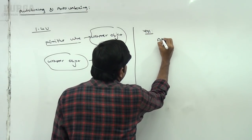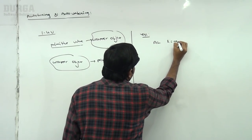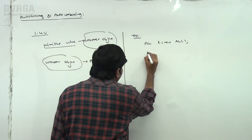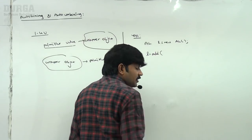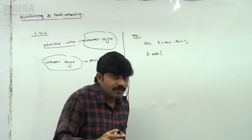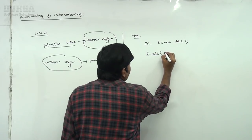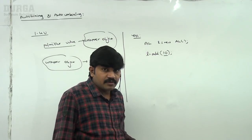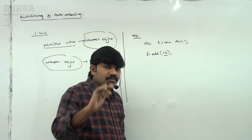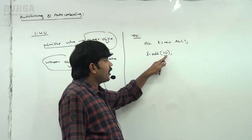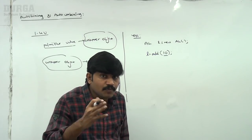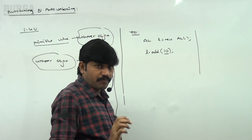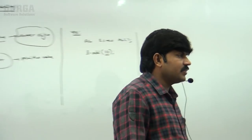I have an ArrayList: `ArrayList l = new ArrayList(); l.add(...)`. The `add` method always expects an Object as the argument, but instead of an object I provided primitive value 10. Immediately an error we are going to get, because in the place of an object you can't provide a primitive value. Let me show this practically.